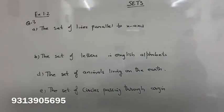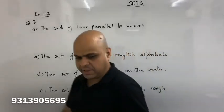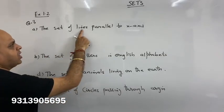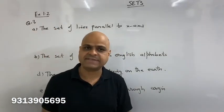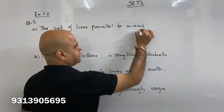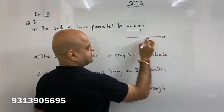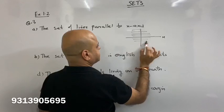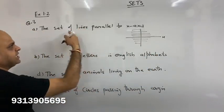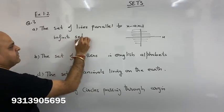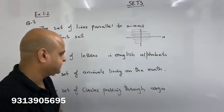Next: finite and infinite sets with no numerical value given. Set of all lines parallel to the x-axis — how many lines can be parallel to the x-axis? Infinite. Draw the x-axis; lines above and below can go on infinitely in both directions. So the set of all lines parallel to the x-axis is an infinite set.